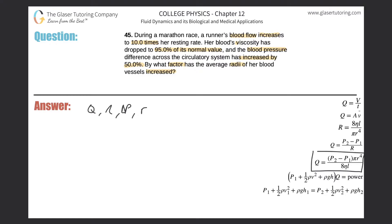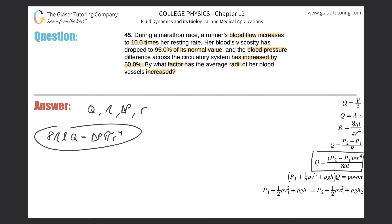Whenever I hear things like 'goes up 10 times,' 'reduced by 95 percent,' I think about creating a proportion. What I suggest is taking the equation, finding the right equation that relates the variables, and then making it linear — meaning neither side has a denominator. So if I bring everything out of the denominator, the equation looks like: 8 times viscosity times length times Q equals delta P times pi times r to the fourth.